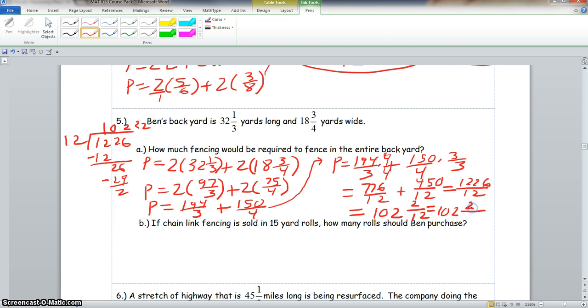Our numerator would have a 2, and our denominator is 12, breaks down to 2 times 2 times 3. These two simplify out, and your final answer would be 102 and 1 sixth. And that is the final answer.